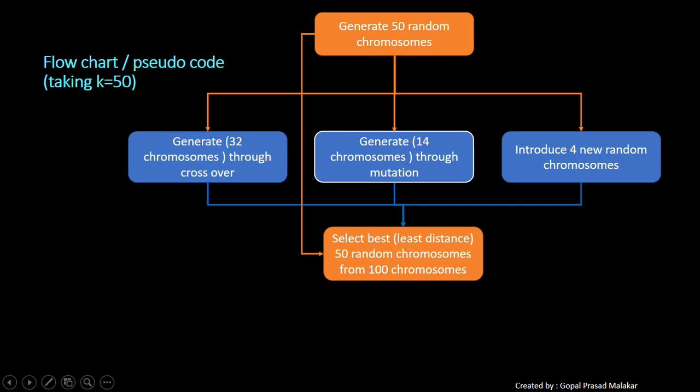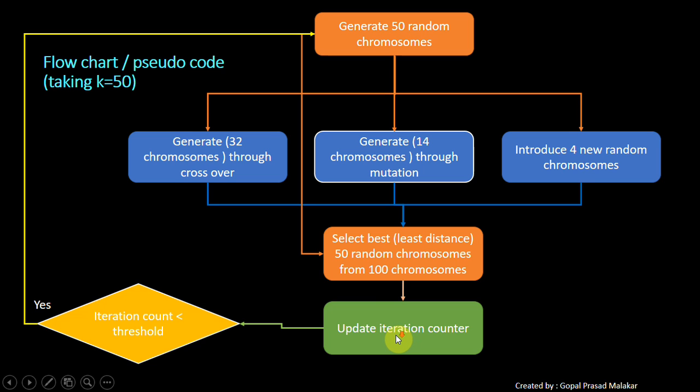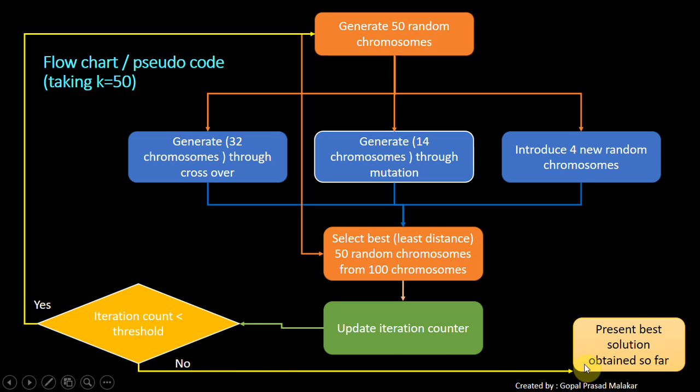These 50 and the above 50 make 100. You try to get the best 50 chromosomes. That's like survival of the fittest. You update the iteration counter. In the beginning, you will say it is 1, then 2. If your iteration threshold is, let's say, 100, then you will repeat it till the time it is 99. If iteration count is less than threshold, you will repeat the whole process. If your iteration threshold has reached, then this is the solution.